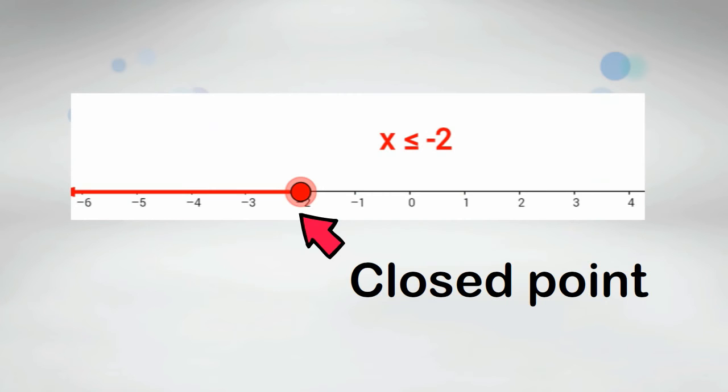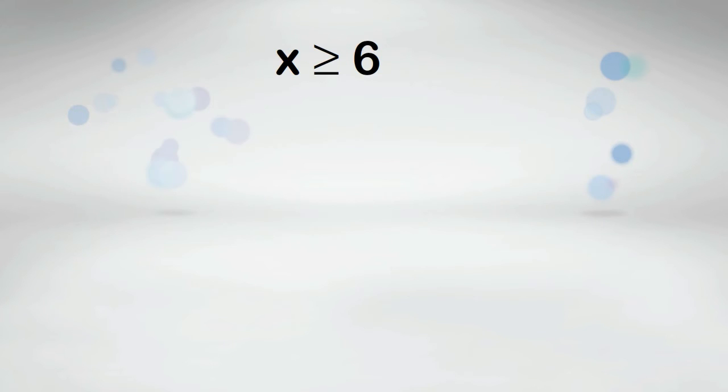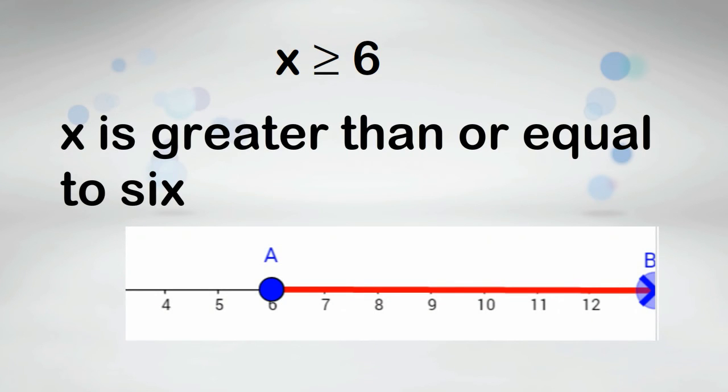A closed point means that the number is included in the solution. X is greater than or equal to 3. A closed point is used because the 3 is included. x is greater than or equal to 6, again an open point is included.